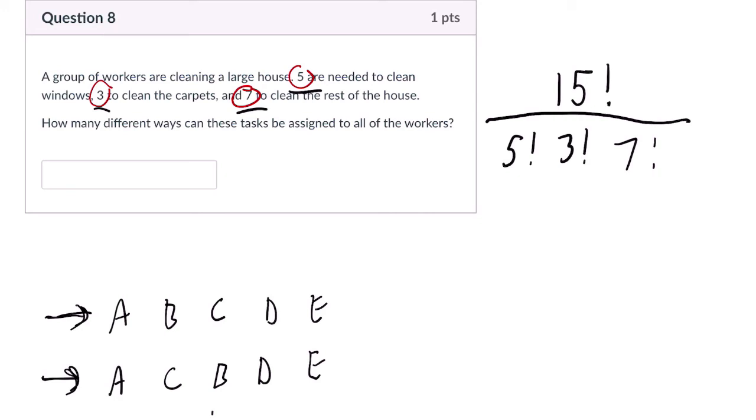Now, when you're dividing this, make sure you keep your order of operations set up. So if you want to do it all in one shot, you want to do 15 factorial, and then divide it by parentheses, five factorial, three factorial, and seven factorial.